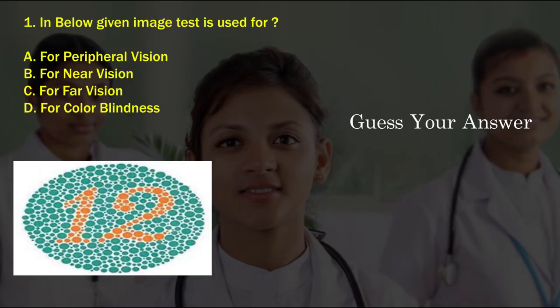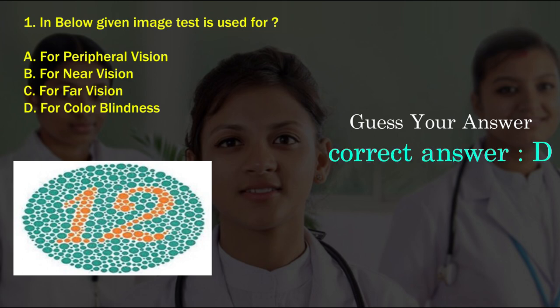The below given image is a test used for — option A: peripheral vision, option B: near vision, option C: far vision, option D: color blindness. The correct answer is option D, color blindness.